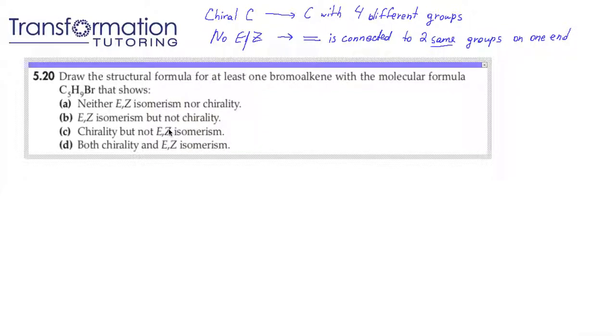As we can see, I wrote above that a molecule that will exhibit chirality must have at least one chiral carbon, and a chiral carbon is a carbon that has four different groups attached to it. Now, if a molecule exhibits no EZ isomerism, that means that it has a double bond, but this double bond is connected to the same two groups on one of the ends.